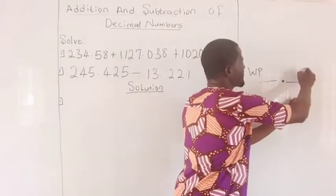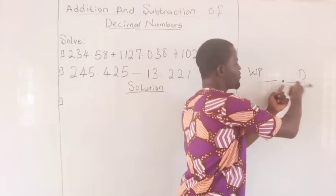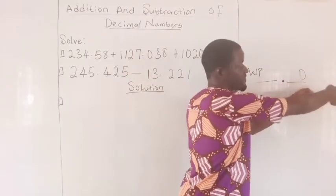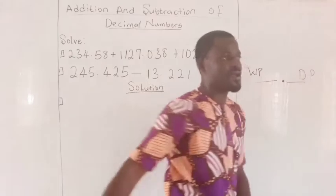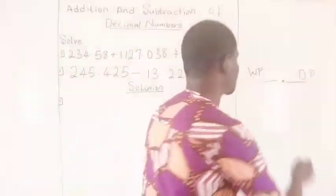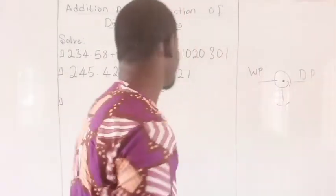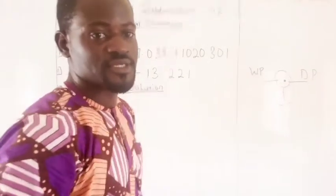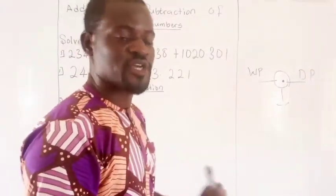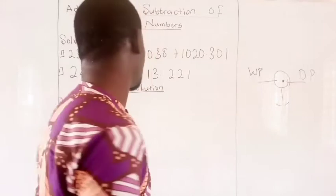And after the decimal point, any number after the decimal point is the decimal part. And this is the decimal point, the center. So, arranging these digits, knowing how to arrange them matters a lot.